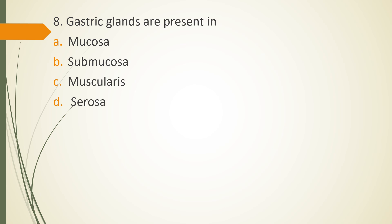Question 8. Gastric glands are present in. Option A. Mucosa. Option B. Submucosa. Option C. Muscularis layer. Option D. Serosa. The correct answer is option A. It is present in mucosa.